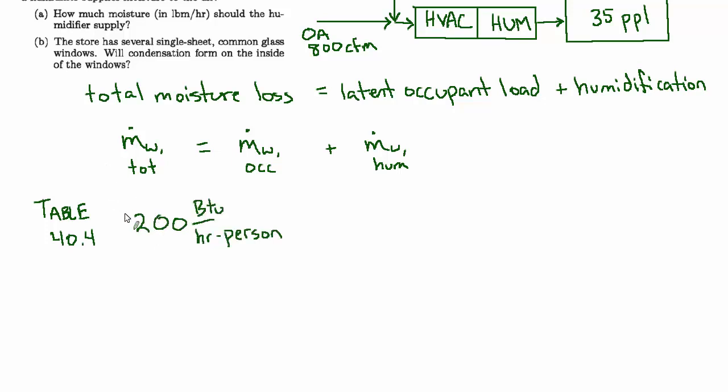Obviously, if the people were sitting or exercising, it would be a lot less or a lot more, but this is a good reasonable average number to use. And then we know that there's 35 people, so that's 7,000 BTU per hour total.